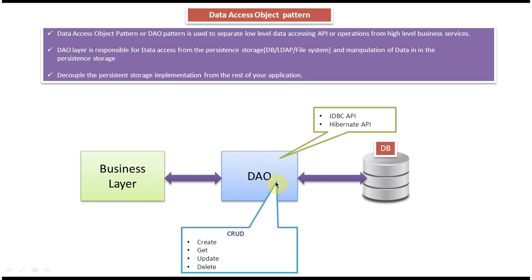So this is the intermediate layer between the business layer and the database. It is used to separate the low-level accessing API from the high-level business service.